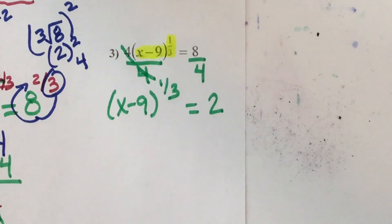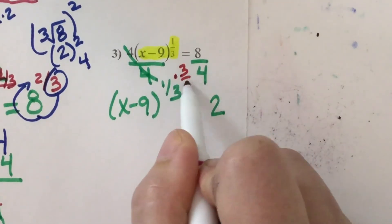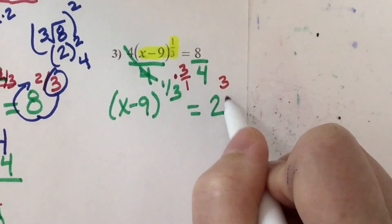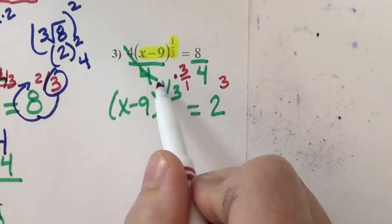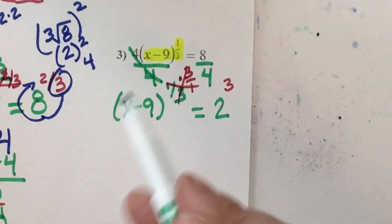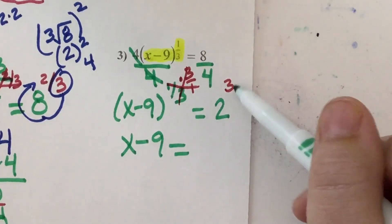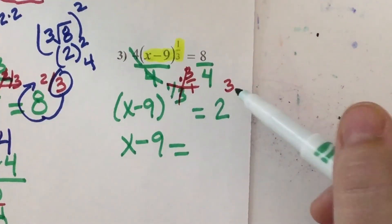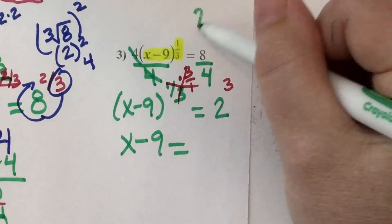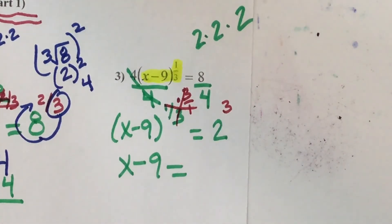Now I'm ready for my reciprocal exponent. The reciprocal of 1/3 is 3 over 1 — and 3 over 1 is the same thing as just a 3. The 1's and 3's cancel — all I'm left with is x minus 9 on the left-hand side. On the right-hand side, I don't have to go around the world, because 3 over 1 is not a fraction exponent — it's just 2 to the 3rd power. 2 times 2 times 2 is 8. So that's just an 8.